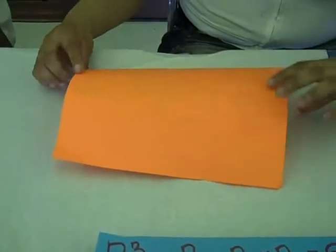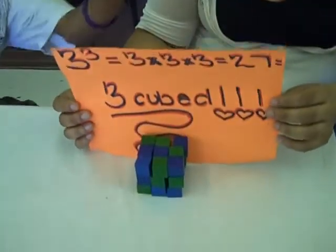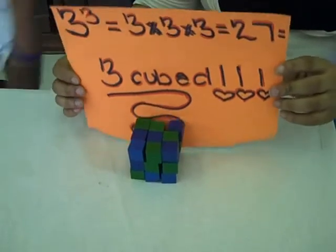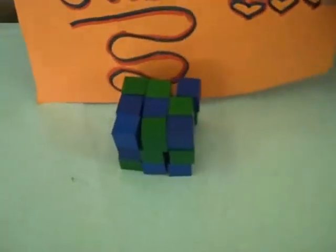The next one is 3 cubed, which equals 3 times 3 times 3, which equals 27. This represents 3 cubed. See the number 3?